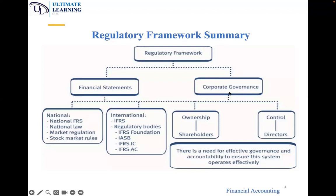On the other hand, corporate governance — the systems by which organizations are directed and controlled — looks at the ownership of businesses versus the control of businesses. Shareholders are the ones who own businesses, but they delegate their role of controlling businesses to the directors. Therefore, the directors take stewardship of the businesses on behalf of the owners. There is a need for effective governance and accountability to ensure this entire system operates effectively.